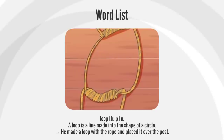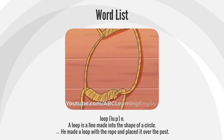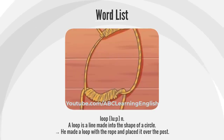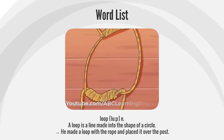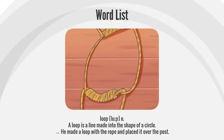Loop. A loop is a line made into the shape of a circle. He made a loop with the rope and placed it over the post.